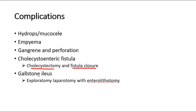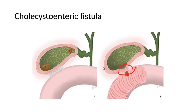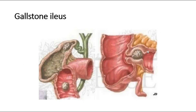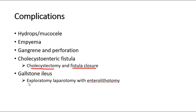Another complication is gallstone ileus. This is due to the cholecystoenteric fistula, where a passage connects the gallbladder and the bowel, allowing a gallstone to pass into the enteric lumen. The most common site of obstruction is the terminal ileum, and the patient may present with symptoms of small bowel obstruction. Treatment is exploratory laparotomy with enterolithotomy — removal of the obstructing gallstone via a small bowel enterotomy proximal to the obstruction. The entire bowel is also searched for other gallstones. Cholecystectomy may be performed in the same operation if the patient is stable and inflammation is not too severe.